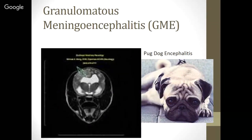Granulomatous meningoencephalitis, also called pug dog encephalitis, or GME, is an inflammatory disease of the central nervous system of dogs. It leads to focal or disseminated granulomatous lesions — granuloma formation of scar tissue — within the brain and/or spinal cord, producing a non-suppurative meningitis and perivascular mononuclear cuffing.